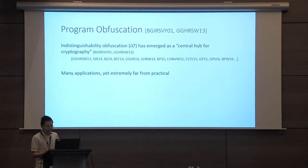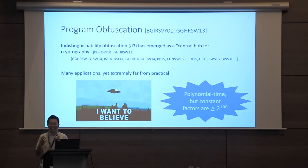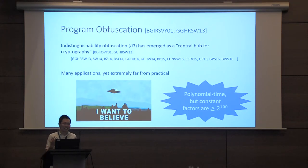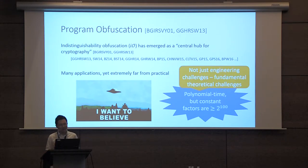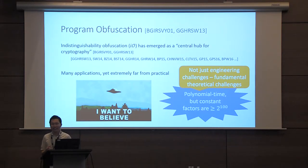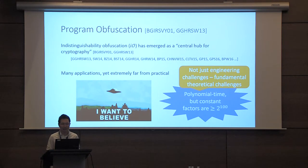But if we take a closer look at it, what we end up seeing is that there are very, very big constant factors. So when you want to actually use indistinguishability obfuscation to instantiate your favorite cryptographic primitive, you suddenly see that it is a polynomial time algorithm, and yet the constant factors are something like 2 to the 100. So we want this primitive, and yet it still seems very far away from being concretely realizable. When we look at constant factors as big as 2 to the 100, deploying indistinguishability obfuscation is not an engineering problem — it's not just about finding more efficient ways of computing these things. There are actually fundamental theoretical challenges that we have to overcome in order to make these things practically realizable.